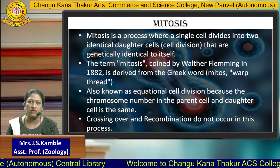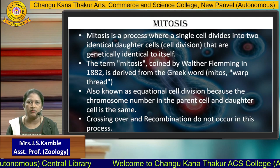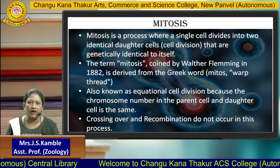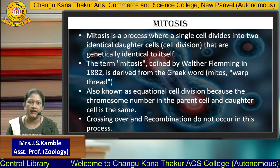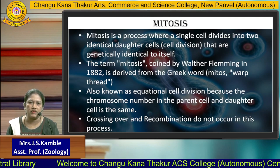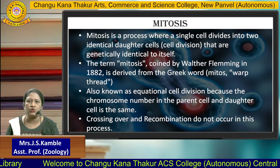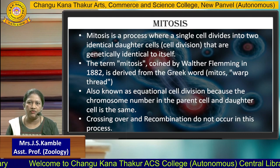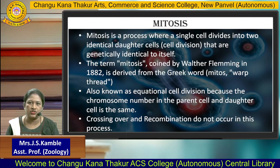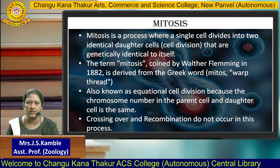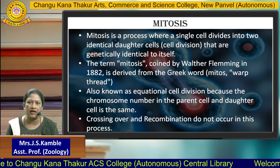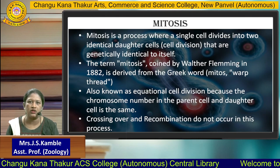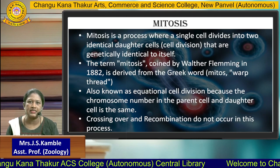The term mitosis is derived from the Greek word 'mitos', which means 'wrap the thread'. The term mitosis was coined by Walther Fleming in 1882. It is also known as Equational Cell Division, because the chromosome number in the parent cell and the daughter cell is the same.